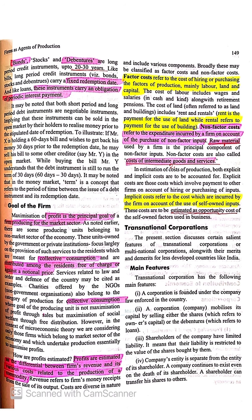Yahaan par aage discuss kiya hua hai ki profits kya hote hain. Jab hum total revenue mein se total cost minus kar dete hain, wo kehlayenge profit. Cost ka aage explain kara hua hai — ek factor cost hoti hai, ek non-factor cost hoti hai. Factor cost jo utpadan ke sadhanon par lagaai jaati hai, jaise land, labor, capital, entrepreneur. Aur non-factor cost hoti hai raw material ya intermediate goods ya services ke upar jo cost lagti hai.